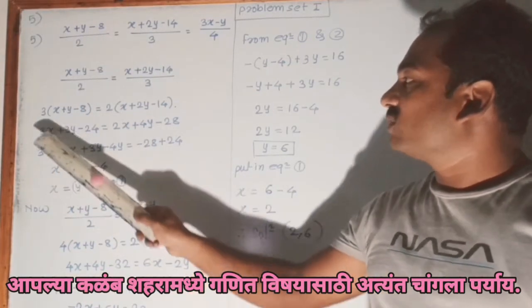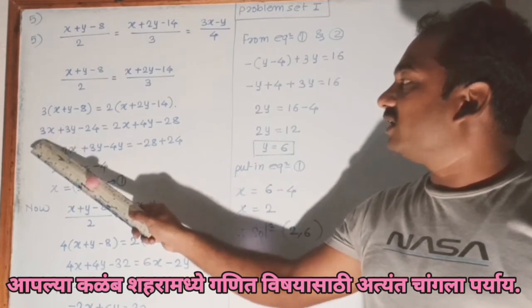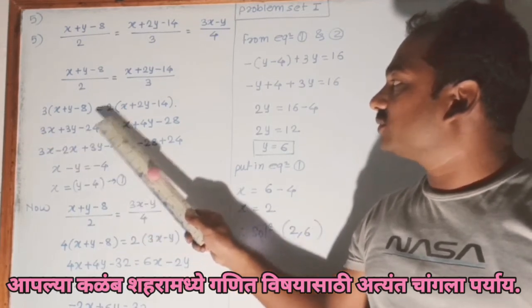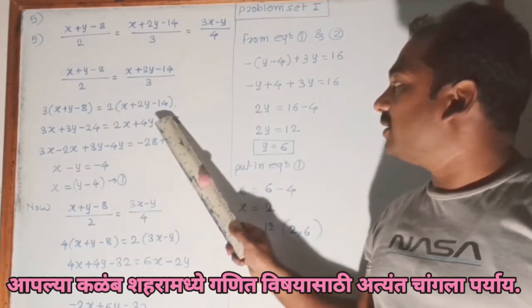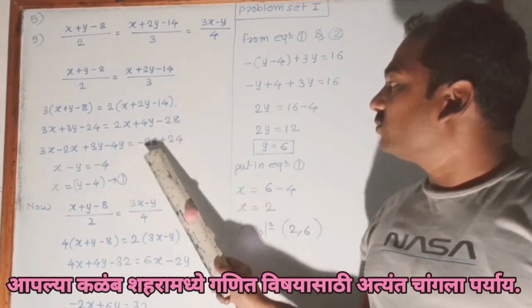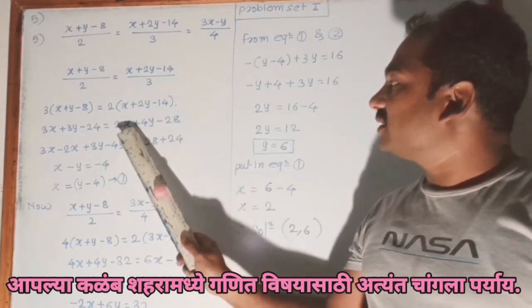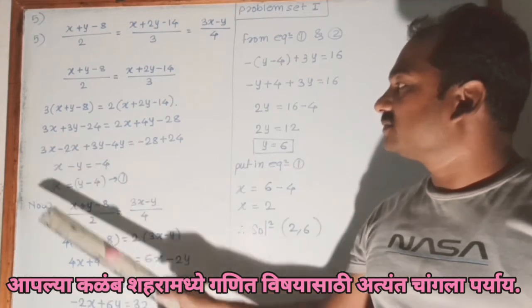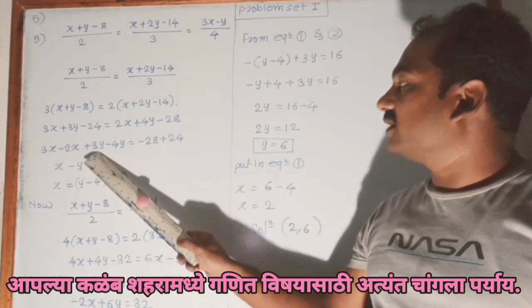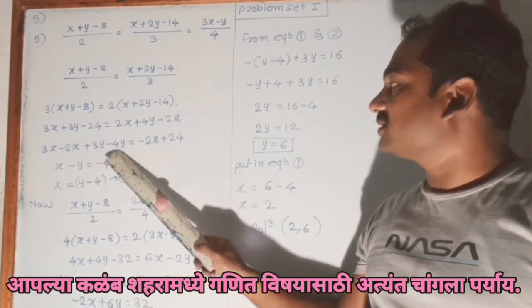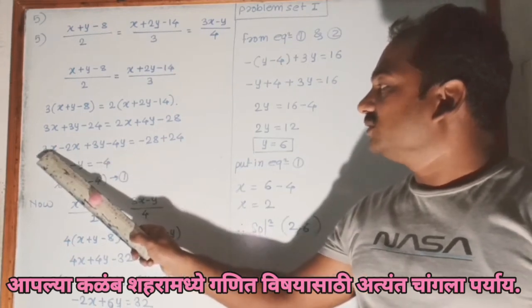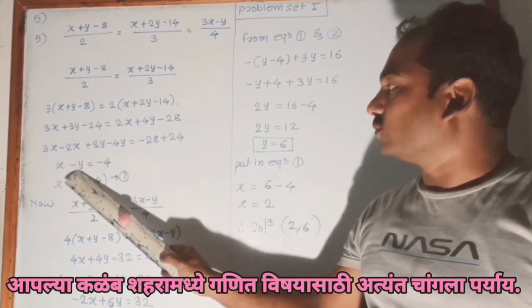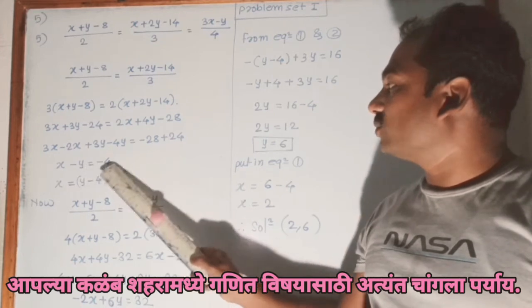So we multiply: 3(x + y - 8) = 2(x + 2y - 14), giving 3x + 3y - 24 = 2x + 4y - 28. We shift the terms: 3x - 2x, 3y - 4y. So we get x - y = -4.